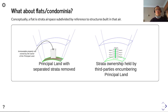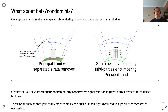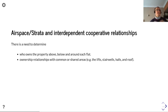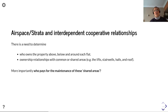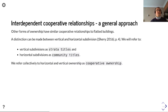However, when flats and condominiums use strata, conceptually a flat is strata airspace subdivided by reference to structures built in that airspace. Owners of flats have interdependent, community cooperative rights relationships with other owners in the flatted building, and these relationships are significantly more complex and onerous than rights required to support other separated ownership. There is a need to determine who owns the property above, below, and around each flat, and these ownership relationships each flat owner has with common or shared areas — the lifts, stairwells, hall, and roof — and importantly, who pays for the maintenance of these shared areas.